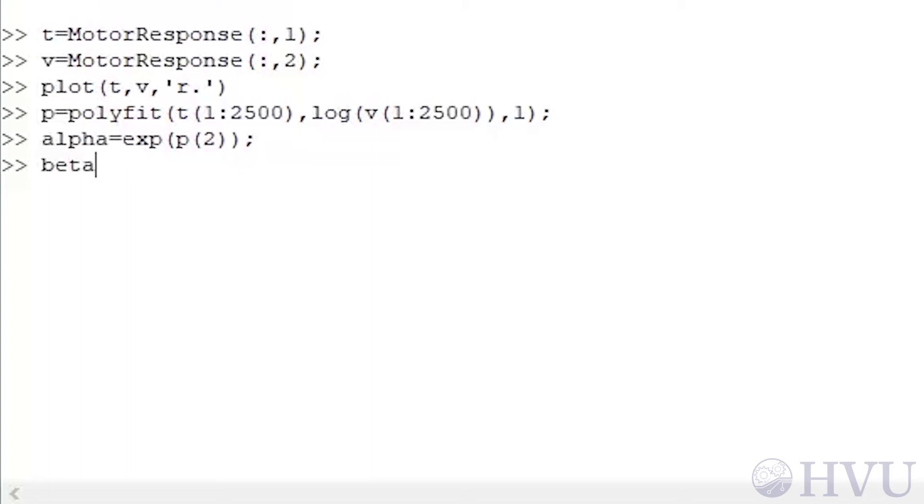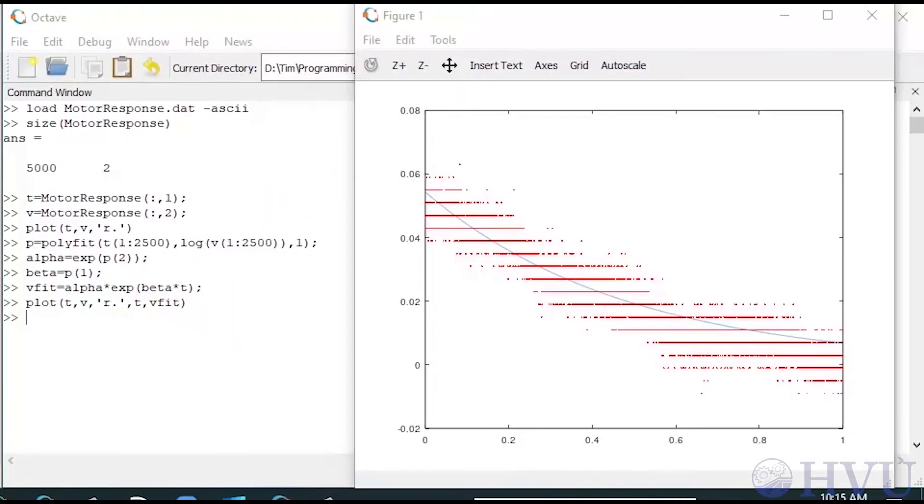Beta is just the first element of P, so beta equals P of one. Now I'll plot the curve fit and the data for the entire 5000 points. First I need to evaluate the function for the values of time in my t-vector. Finally I'll plot the data along with the curve fit. The curve fit looks pretty good compared to the data, especially considering that only the first half of the data were used in the curve fit.